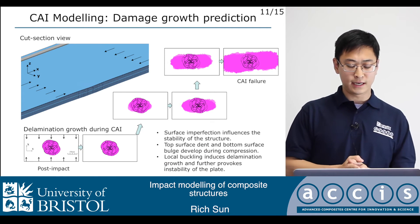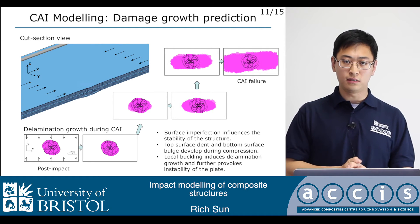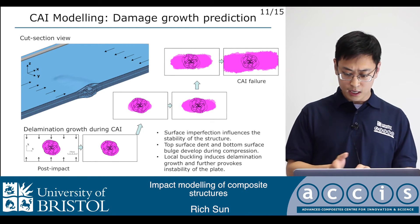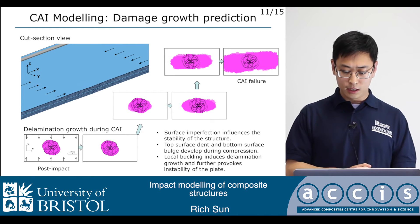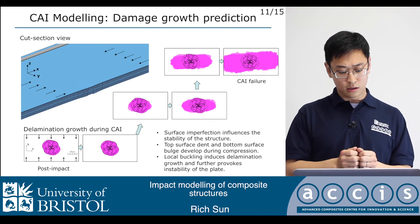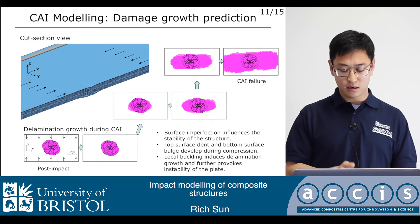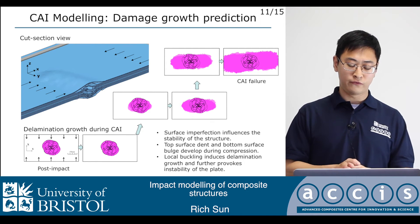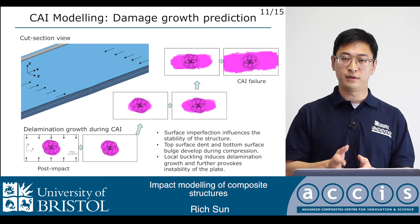This shows the high fidelity model predicting damage growth during compression after impact. Similar to what we see in the DIC results, the model captures the surface dent at the top surface and bottom surface bulge developing during compression. Because of this, local buckling induces delamination to propagate along the width direction of the structure, further provoking instability of the plate. This allows us to investigate the possible causes of instability in damaged plates.